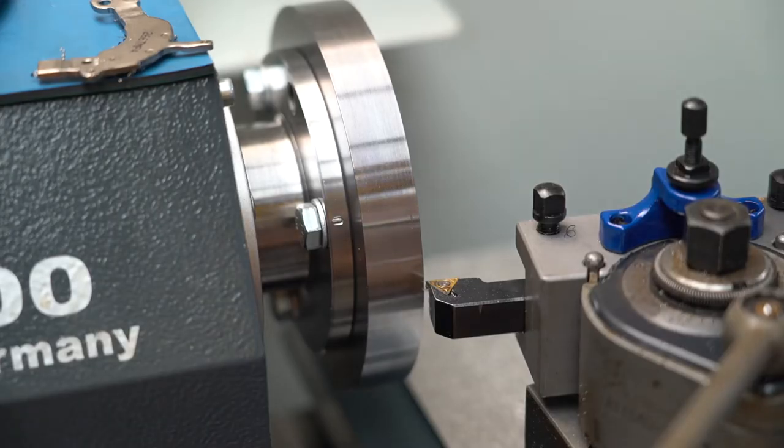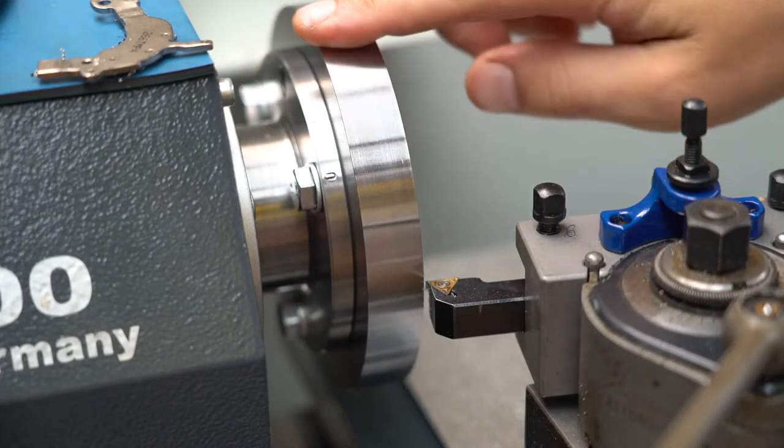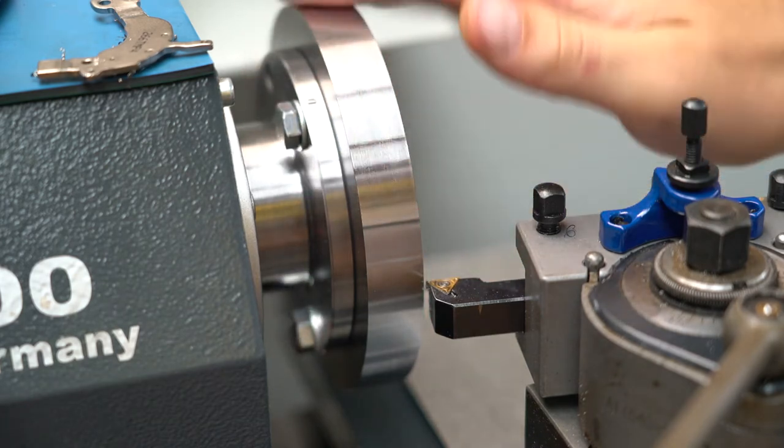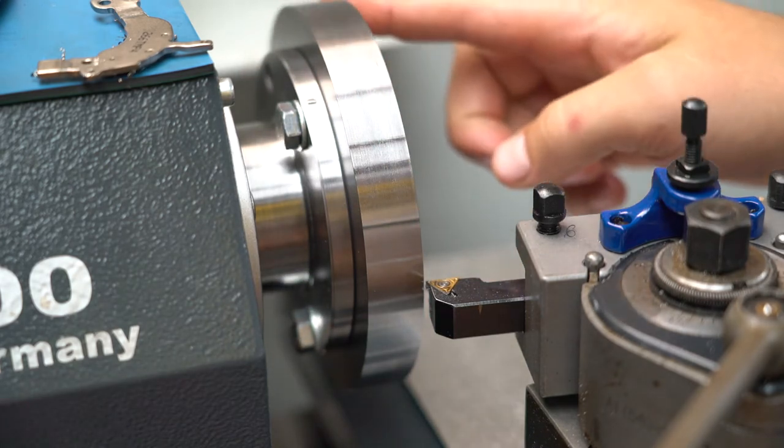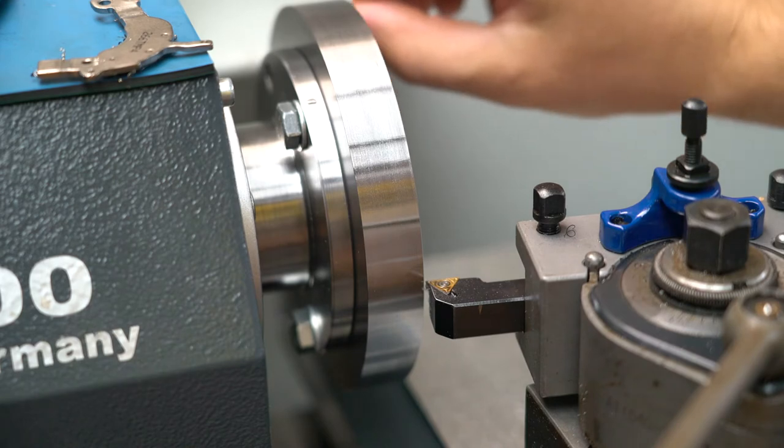So now that I've got it mounted on the spindle, I'm just going to reduce the outside to the required diameter and then start facing this side for the chuck.